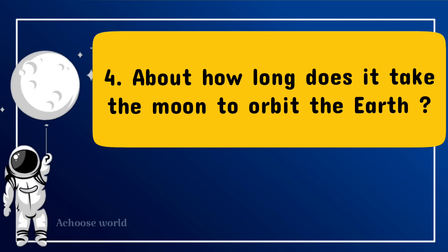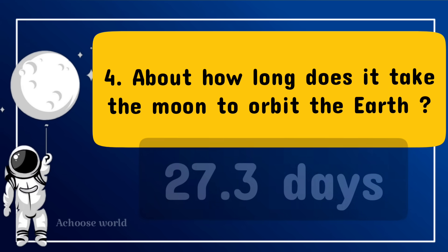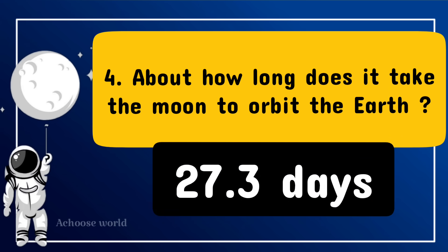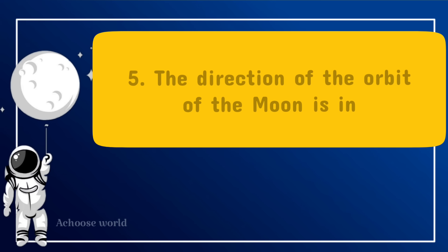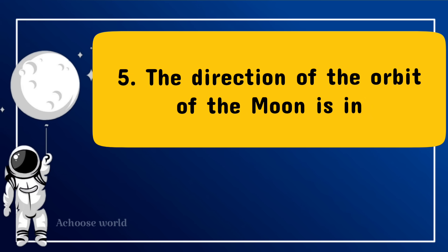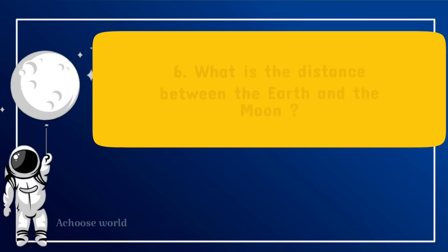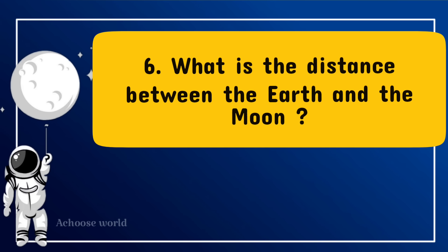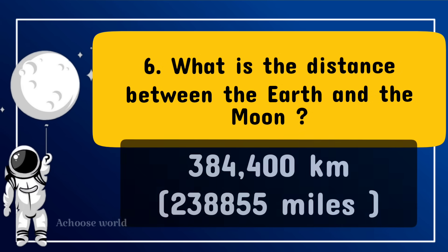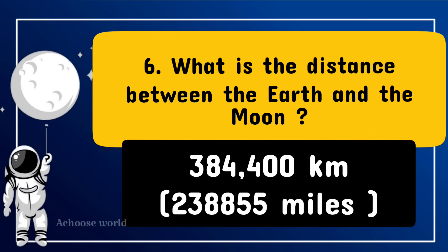About how long does it take the Moon to orbit the Earth? 27.3 days. The direction of the orbit of the Moon is in the same direction as the Earth. What is the distance between the Earth and the Moon? 384,400 km.